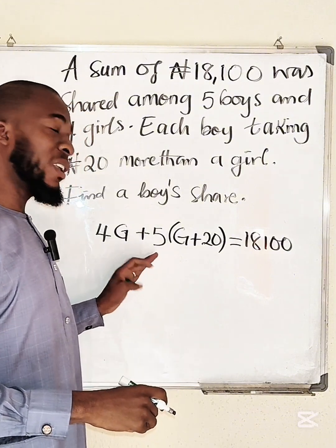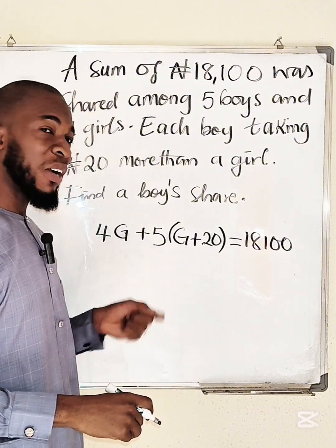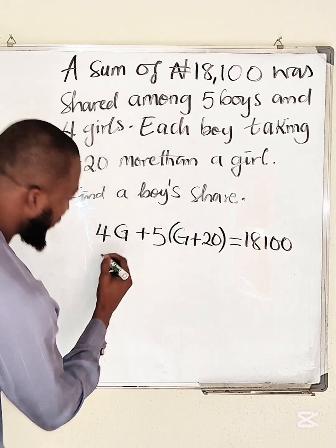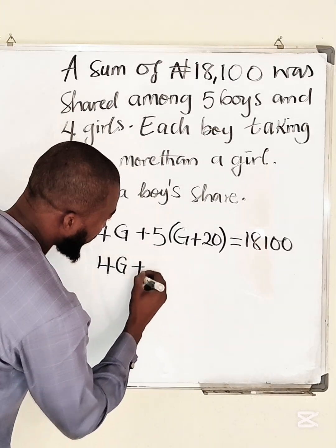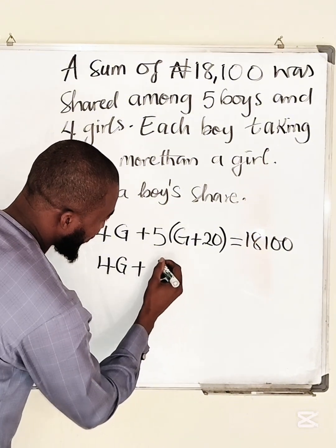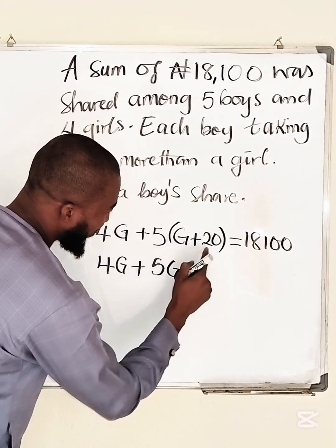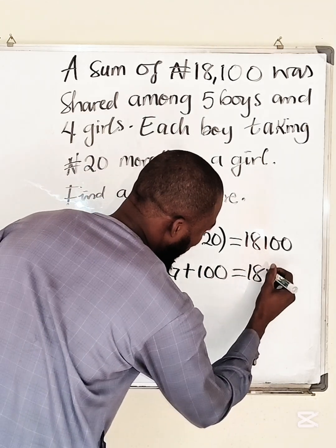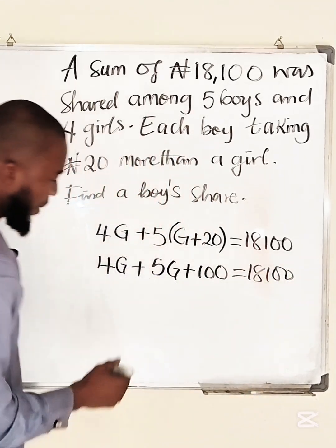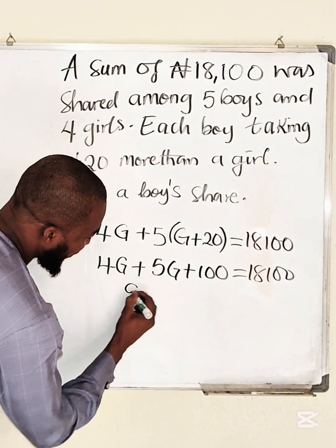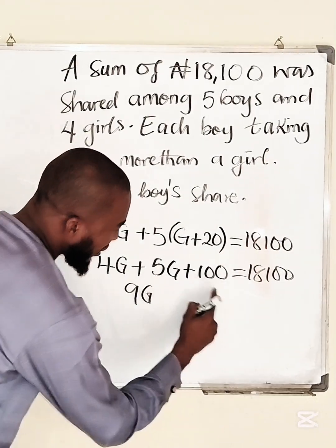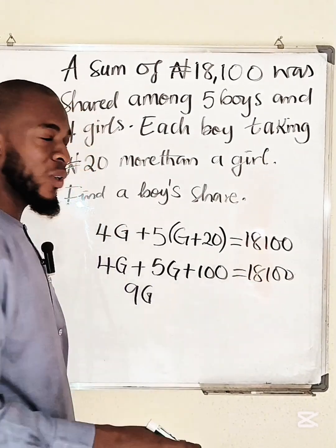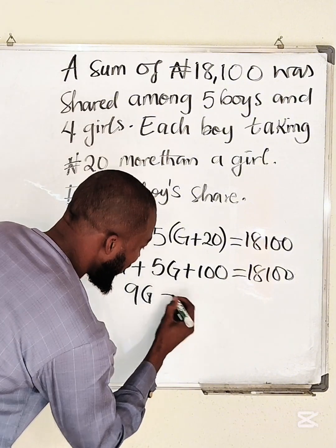After solving this equation, it will give us the share of each girl, then we add 20 to get the boy's share. This gives us 4g plus 5g equals 9g, and 5 times 20 is 100. So we have 9g plus 100 equals 1800. Taking 100 to the other side gives us 9g equals 1800 minus 100, which equals 1800.